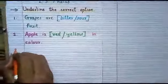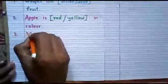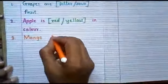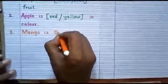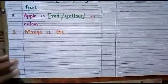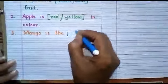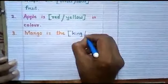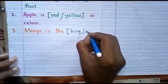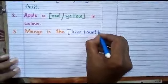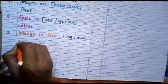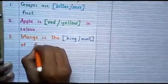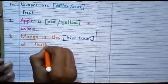Number 3. Mango. M-A-N-G-O. Mango is the bracket king, K-I-N-G, or aunt, A-U-N-T, of fruits. F-R-U-I-T-S. Fruits.